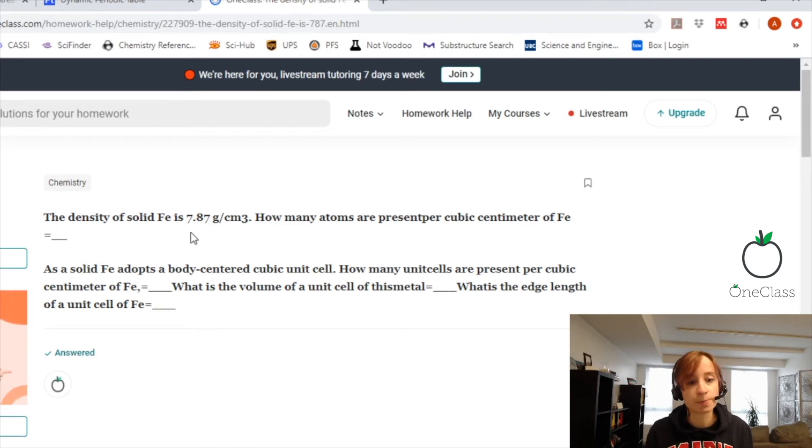We're just going to do the first part here. The density of solid iron is 7.87 grams per centimeter cubed. How many atoms are present per cubic centimeter of iron?